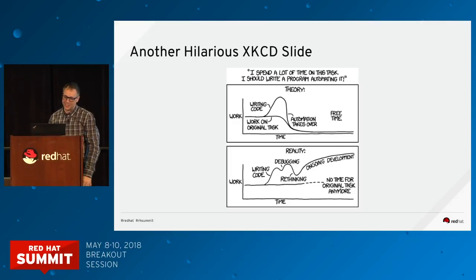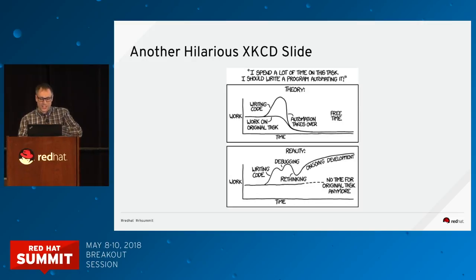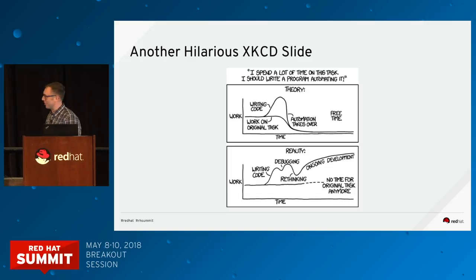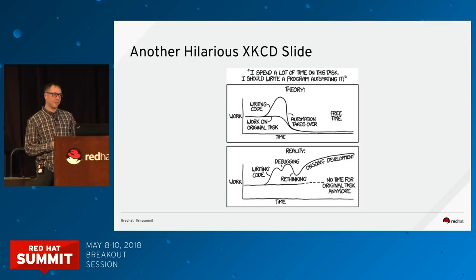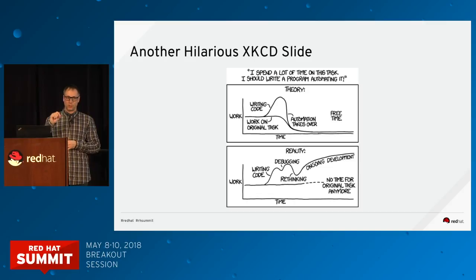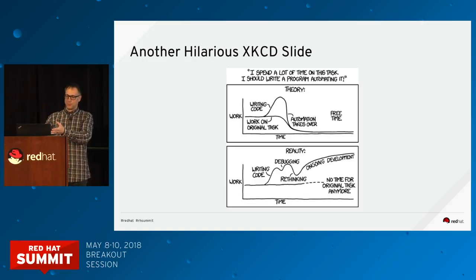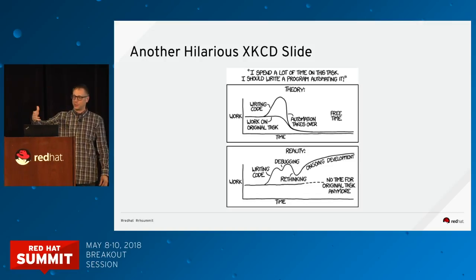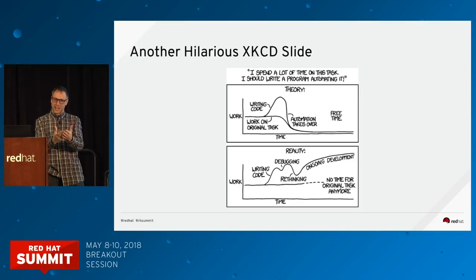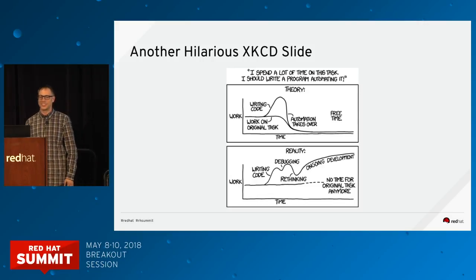We want to automate everything, but what happens when we automate everything? We end up spending a lot of time changing the automation. Once you automate stuff, you have to think about where the human input is—you have to show people where the Git repo is, how to commit to it, what the process is to get things reviewed and promoted. Those things still need to be documented. There's always documentation, even with automation.